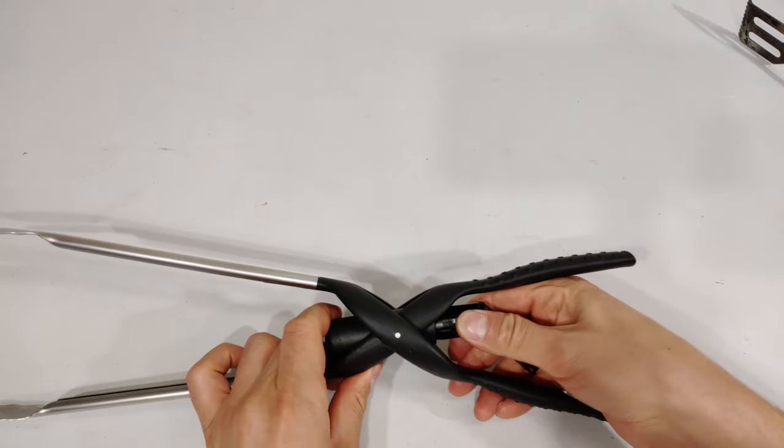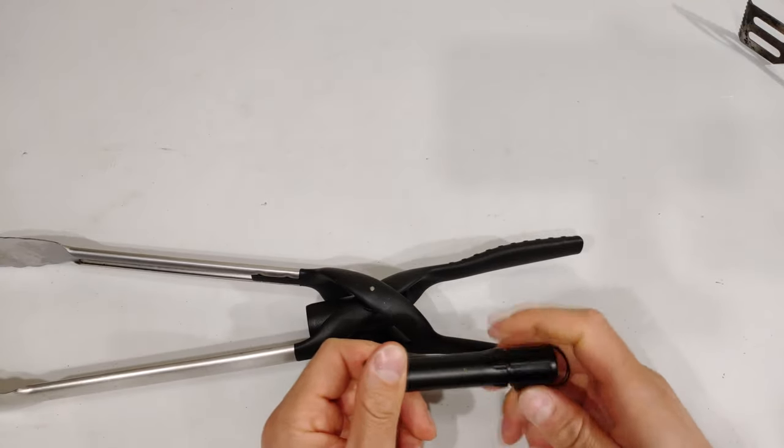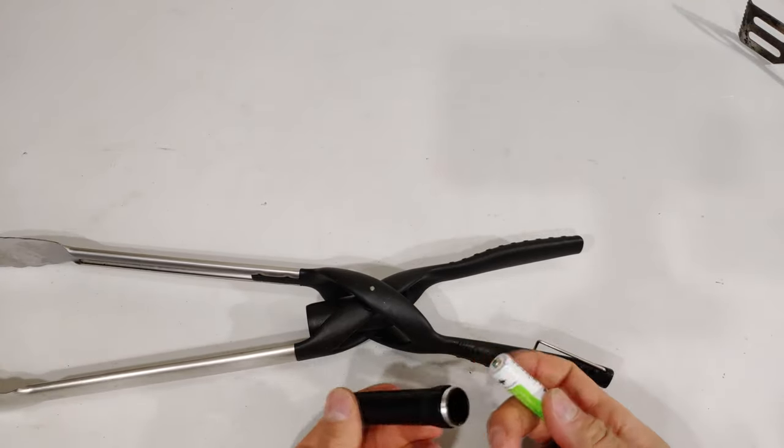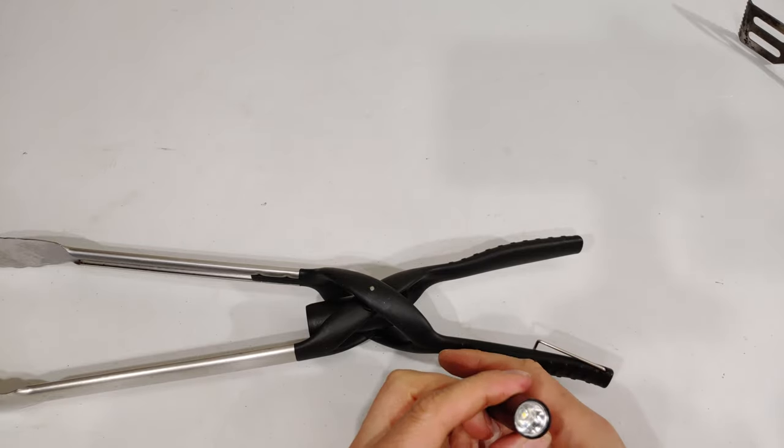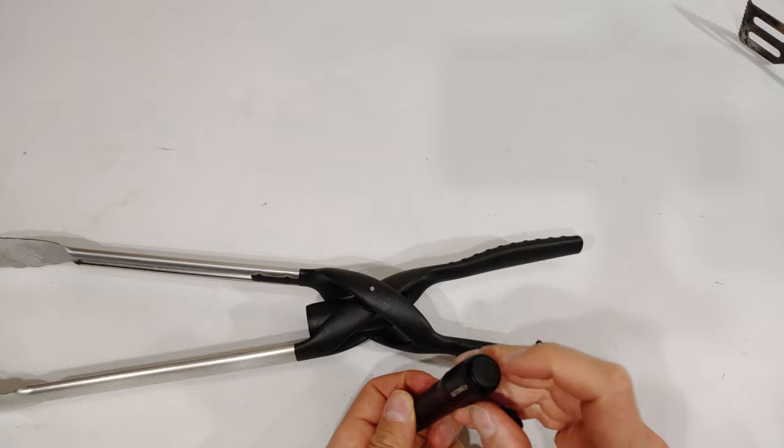The torch itself is an alloy and takes a double A battery. It's an LED type torch, there's the back and there's the rubberized little button there.